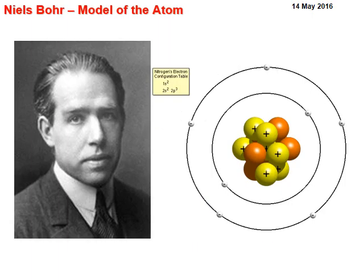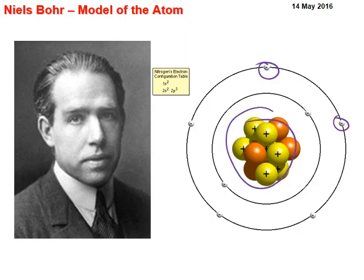Moving on to about 1913, about two years later, Niels Bohr, the famous scientist who developed quantum theory, proposed a planetary model of the atom. In his idea, we had a central nucleus, and these electrons move around like planets in a solar system, each having their own orbit around the positive nucleus.